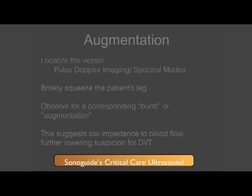First, you will need to locate the vessel. You will then need to select the pulsed wave Doppler imaging modality on your ultrasound machine, also known as spectral Doppler imaging depending on your device. After localizing the vessel, position the pulsed wave Doppler sample gate into the center of the vessel in question. Then, briskly squeeze the patient's calf distal to this portion of the vein and observe for a burst or brisk flow augmentation.